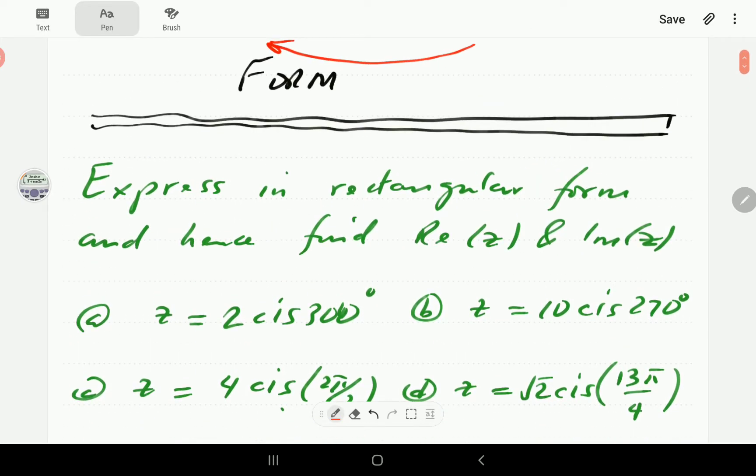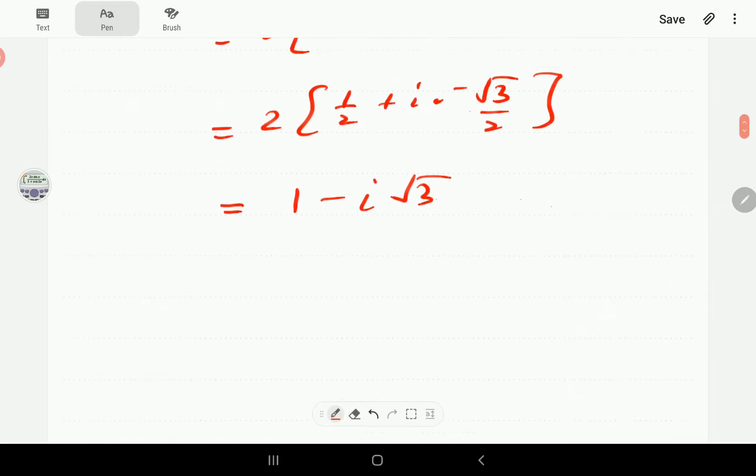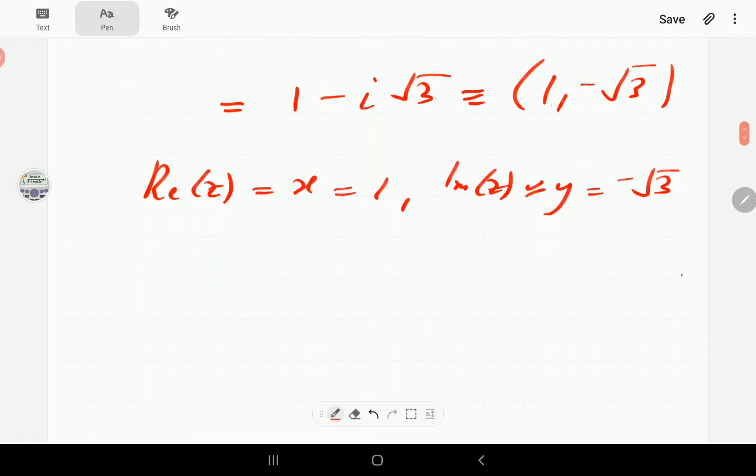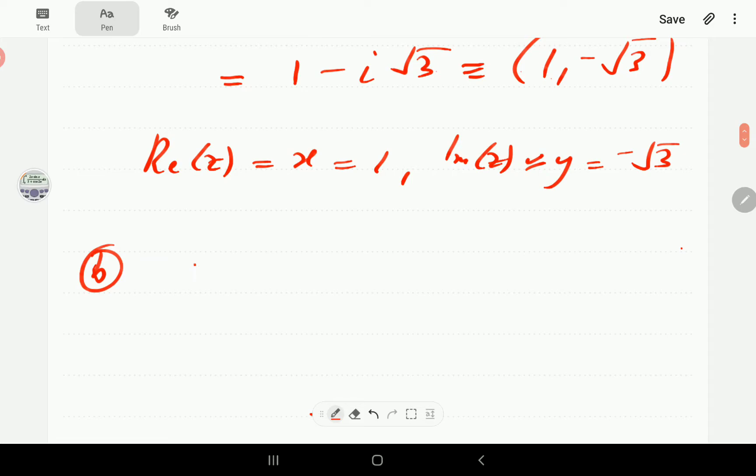The first part of the question says convert to rectangular form, and the second part says find the real part and the imaginary part of z. The real part is the component of the complex number that does not involve i, then the imaginary part is the coefficient of i. So the real part here, which is x, is one. The imaginary part, which is y, is equal to negative root three.